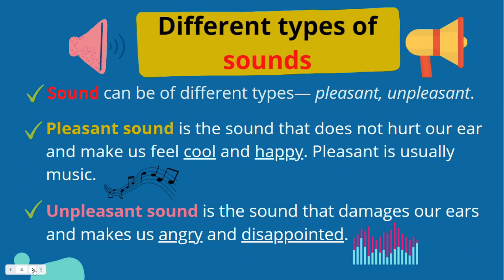Sound is made when something vibrates or moves back and forth. And sound can be of different types. It can be pleasant — this makes us feel cool and happy, usually from the sound of musical instruments. And unpleasant sound damages our ears and makes us angry and disappointed, meaning unpleasing and disturbing to our ears.